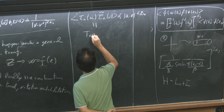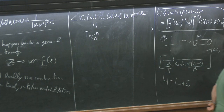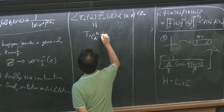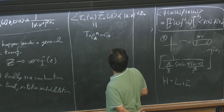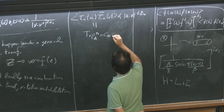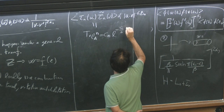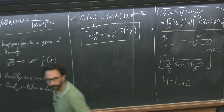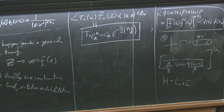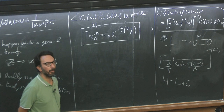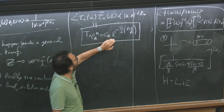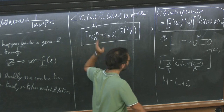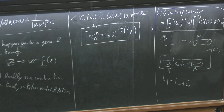But this two-point function was exactly Tr(ρ_A^n) that we were searching for. So we have that Tr(ρ_A^n) is equal to some constant c_n — the constant here that we don't know, but it doesn't matter too much — times L to the minus c/6 × (n − 1/n). This is the final result for the moments of the reduced density matrix within a conformal field theory.